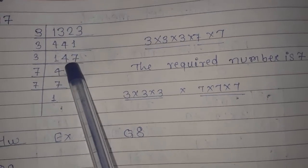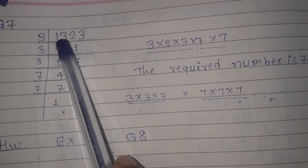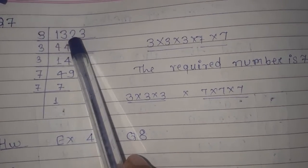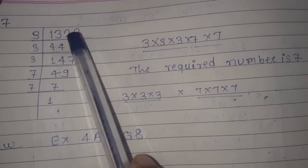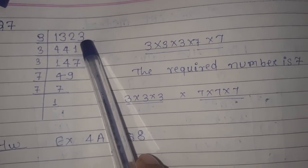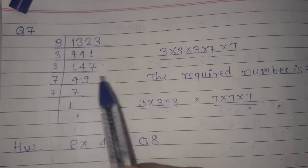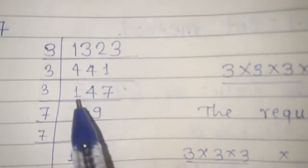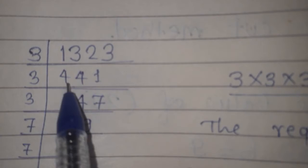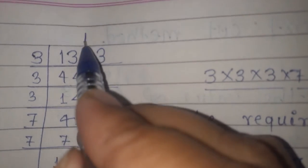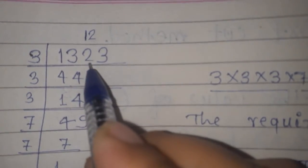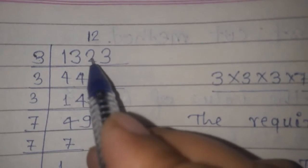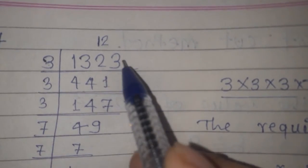3 into 1323. 3 into 4 is 12, remaining 1. 3 into 441, 3 fours are 12, 3 ones are 3. 3 into 147, 3 fours are 12, remaining 1. 3 into 49.